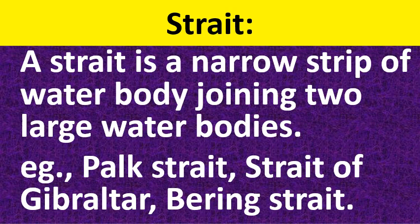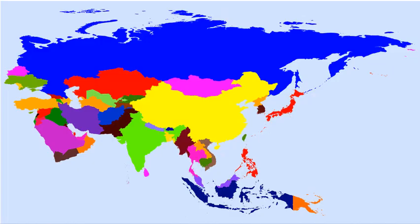What is a strait? A strait is a narrow strip of water body joining two large water bodies. For example, the Palk Strait in India connects the Indian Ocean and the Bay of Bengal. Other examples are the Strait of Gibraltar and the Bering Strait. You can find many straits on the world map.